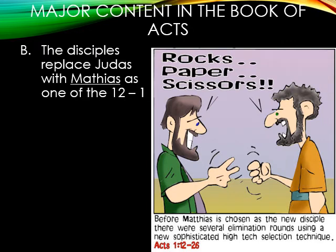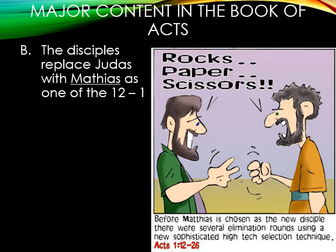Letter B: the disciples replaced Judas with Matthias as one of the twelve. After Jesus' ascension, Peter preaches to the disciples about replacing Judas with someone who had accompanied them from Jesus' baptism to his resurrection. His reasoning was that Jesus had promised twelve thrones to the twelve disciples — they obviously only had eleven. They cast lots, an Old Testament Jewish method using rocks with writings on them, between two individuals: Joseph Barsabbas Justice and Matthias. The lots fell on Matthias, and he became the twelfth disciple.